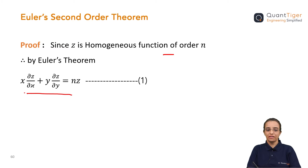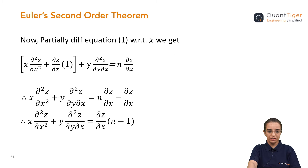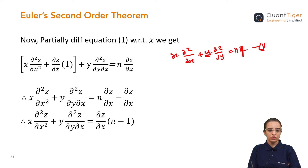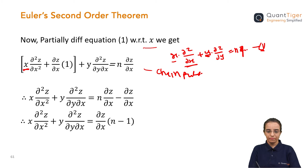Since it's a second order theorem, we have to differentiate one more time with respect to x as well as with respect to y. So first, we start differentiating equation 1 with respect to x. By using the chain rule for the first term: x stays as is, and the derivative of ∂z/∂x gives ∂²z/∂x², plus the second term ∂z/∂x stays, and x differentiated with respect to x gives 1.